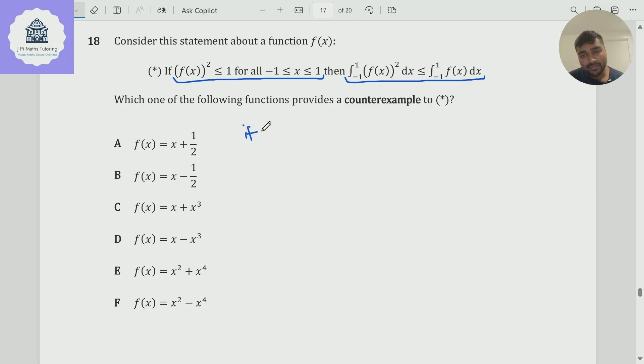For f to be a counterexample to star, we need the following two criteria to hold. We need f to satisfy the condition, so we need f² to be less than or equal to one for all x between minus one and one.